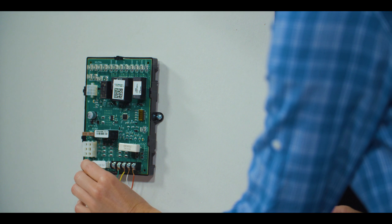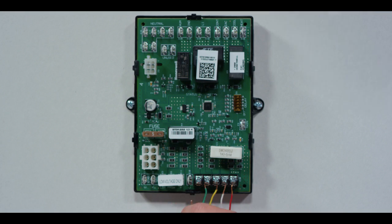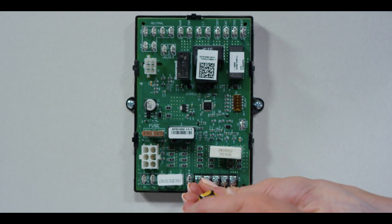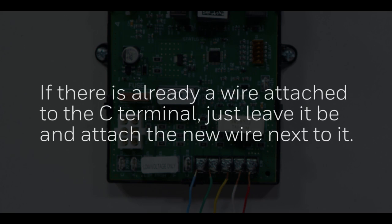Trace the extra unused wire from the thermostat to the furnace board. Make sure it's connected to the C terminal. If there's already a wire attached to the C terminal, just leave it be and attach the new wire next to it.